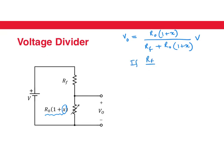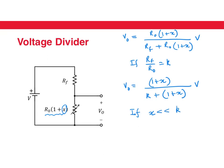If RF over R0 is equal to K, we can rewrite this equation. And if we assume that X, our fractional change in resistance, is much less than K, we can write V_output in a simplified form. We can write it as (1 + X) and essentially ignore X in the denominator because it's much smaller than K, giving us V/(1 + K) plus X/(1 + K) times V.